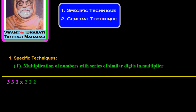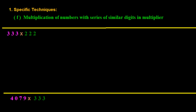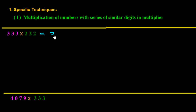In this example, we have 333 multiplied by 222. In the multiplier 222, all the digits are similar. So what we will do first is factorize it: we convert 222 into 2 × 111. So we write 333 × 2 × 111.